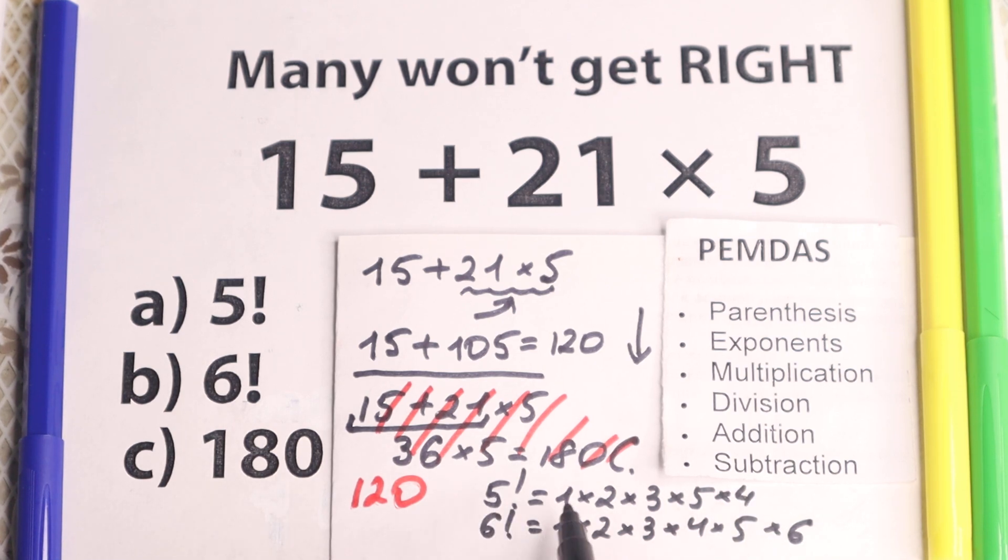Okay, 5 factorial, 1 times 2 is 2, times 3 is 6, 6 times 4 is 24, and times 5 is 120.